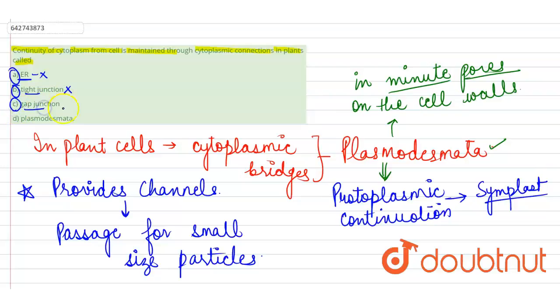Third is gap junction. Gap junction is a kind of junction present between the cells in adjacent, between the cells in tissues. And D is plasmodesmata, as we have just discussed that this is the correct option.